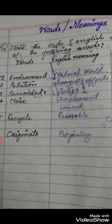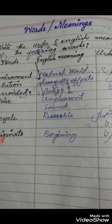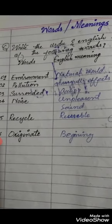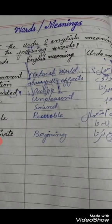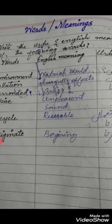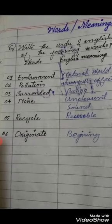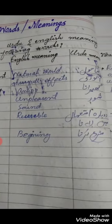Number 4 is Noise — English meaning: Unpleasant sound; Urdu meaning: Shore. Number 5 is Recycle — English meaning: Recipal; Urdu meaning: Duvara's Demand. Number 6 is Originate — English meaning: Beginning; Urdu meaning: Shrukarna.